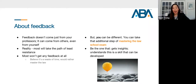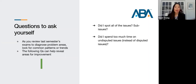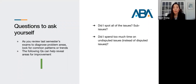I want to give you some questions to ask yourself when reviewing your exams to diagnose your problem areas. Using the IRAC formula — issue, rule, application, conclusion — here's the big I, the issue: Did I spot all of the issues? Did I spot all of the sub-issues? Did I spend too much time on undisputed issues instead of spending more time on the disputed ones?